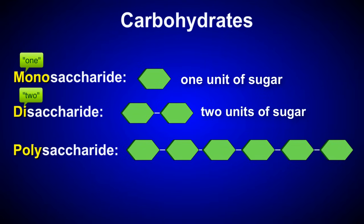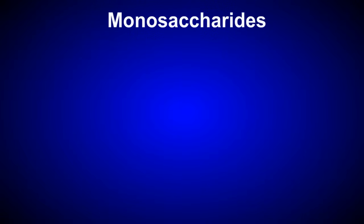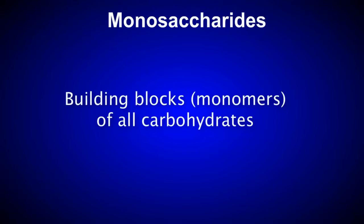And poly means many, so a polysaccharide is made of many sugar units bonded together. Let's talk about monosaccharides first. Monosaccharides are the building blocks, or monomers, of all carbohydrates.